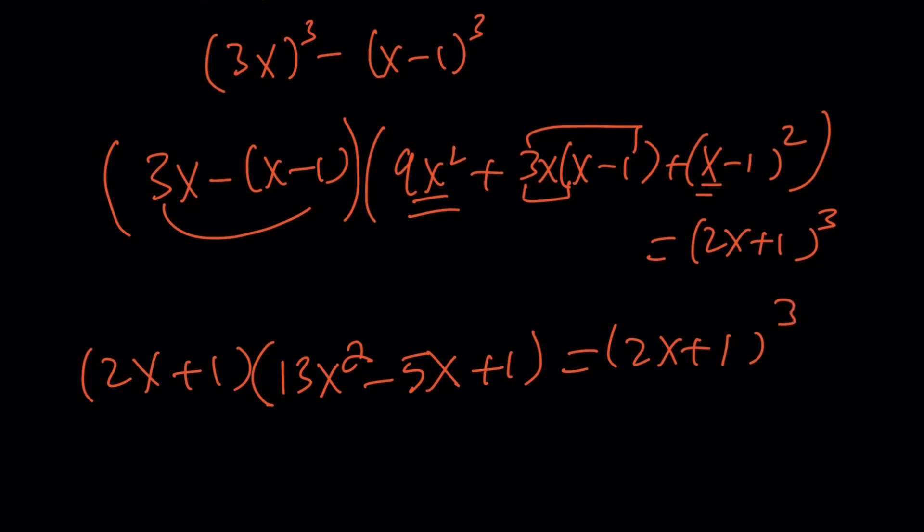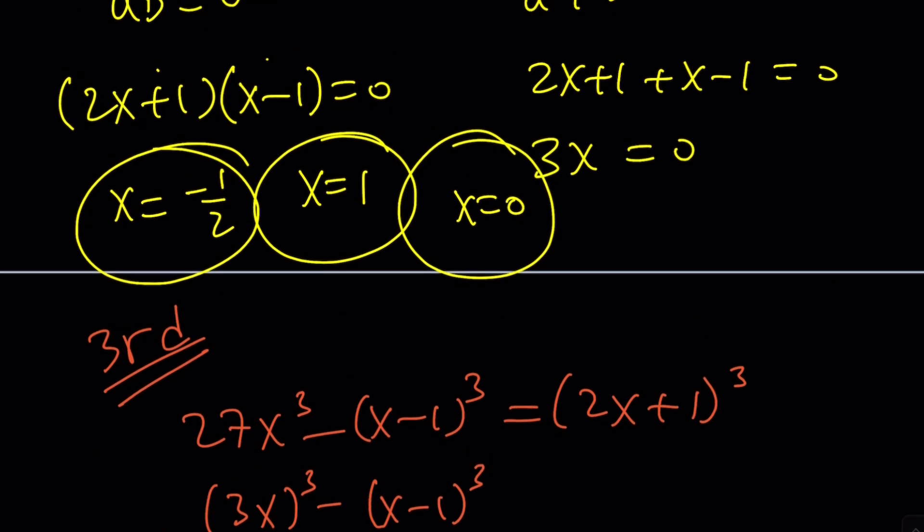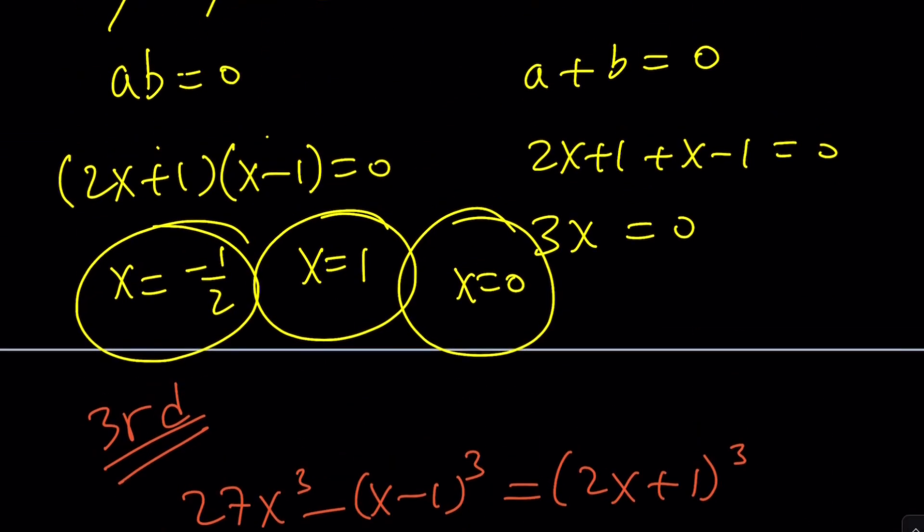So, one of the things you can do is don't cancel out the 2x plus 1, but put everything on the same side, factor out 2x plus 1, and you're going to get (2x plus 1) squared on the right-hand side, which comes from the left-hand side, minus this. And when you expand it, you're going to get a quadratic, which is easy to solve, but this is going to give you a negative 1 half, which we already had before. So, pretty much the same thing.